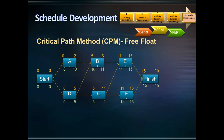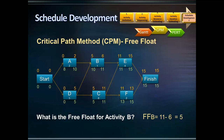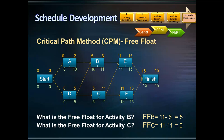What is the free float of activity B? The free float of activity B is the early start of activity E — which is 11 days — minus the early finish of activity B — which is 6 days — so free float of activity B is 5 days. The free float of activity C is zero, because activity C's successors, activities E and F, have an early start of 11 days, leaving no room for activity C to float without impacting them.